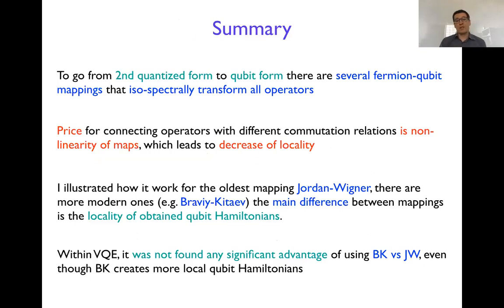Which means that there are more elementary operators in products that appear when you transform the second quantized forms or operators into the qubit forms. I illustrated everything on the Jordan-Wigner mapping, but similarly you can do things with so-called Bravyi-Kitaev mapping.